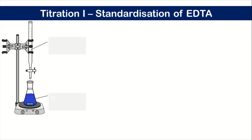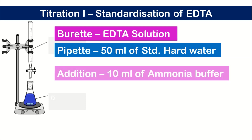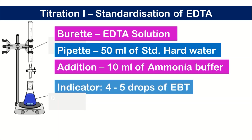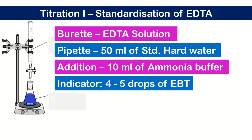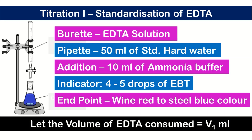Titration one is the standardization of EDTA. We take EDTA solution in the burette and 50 ml of standard hard water in the pipette, then add 10 ml of ammonia buffer to maintain the pH, and four to five drops of EBT indicator. The endpoint is wine red to steel blue. The volume of EDTA consumed is considered V1 ml.